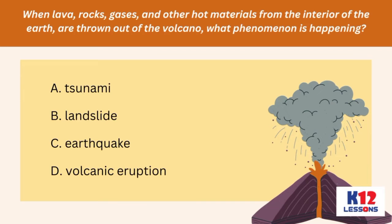When lava, rocks, gases, and other hot materials from the interior of the earth are thrown out of the volcano, what phenomenon is happening? A. Tsunami. B. Landslide. C. Earthquake. D. Volcanic eruption.